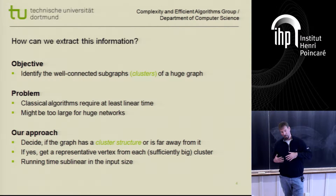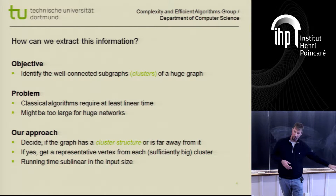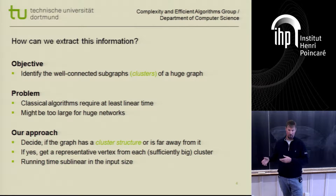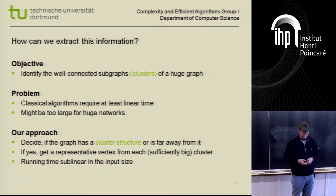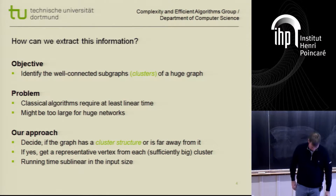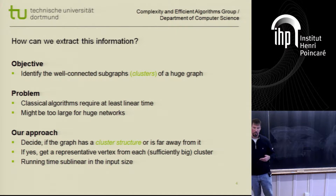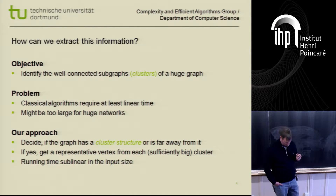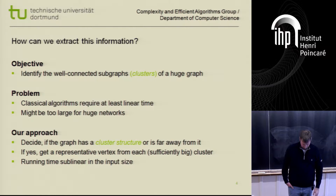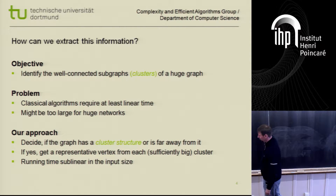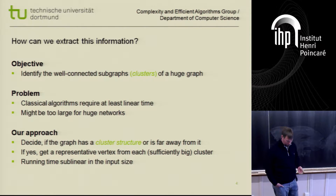In fact, I don't really want to solve the full decision problem, but just decide between the case where I have a cluster structure and the case that I'm really far away from a cluster structure — meaning I'd have to modify the graph in many places to obtain one. If the graph has a cluster structure, I would additionally like to get representatives of each sufficiently large cluster, so I know what each cluster is about.